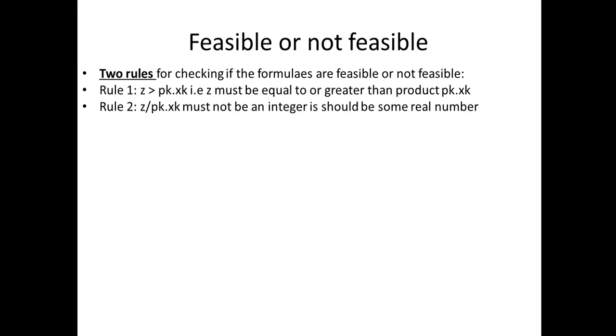Now there are two rules for checking if the formulas, structural formulas that you have developed are feasible or not. Means from these structural formulas, if it is possible to make structural diagrams or not. Rule 1 is Z ≥ PK × XK, means Z must be equal to or greater than the product of PK into XK. Rule 2 says Z/PK×XK must not be an integer, it should be a real number.